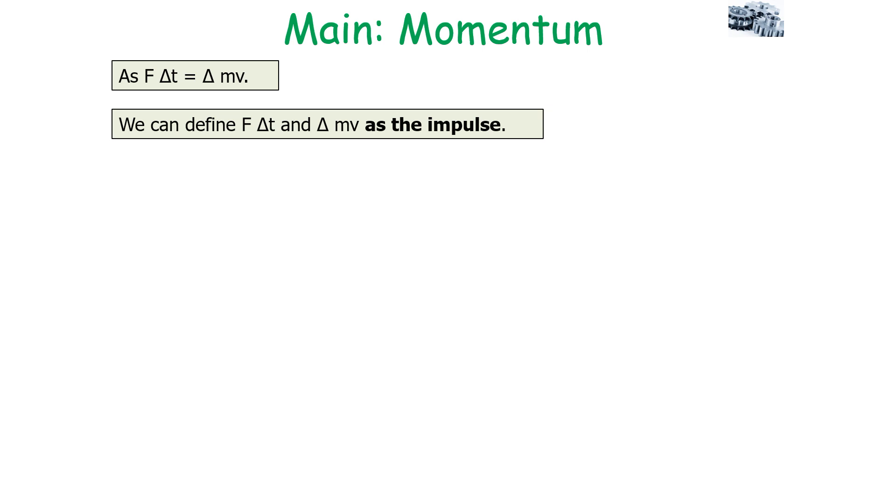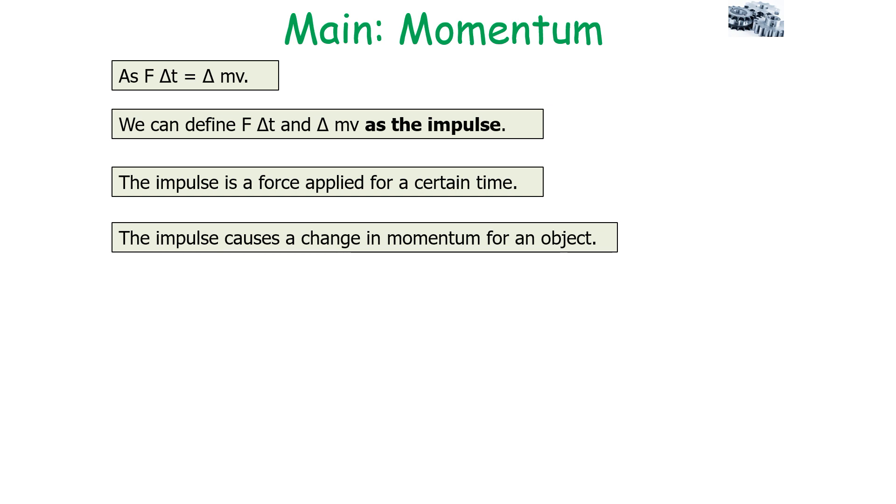Therefore, we can define both force times the change in time and the change in momentum as the impulse. So the impulse is a force applied for a certain time. As mentioned before, the impulse causes a change in momentum for an object and is measured in kilogram meters per second or newton seconds.